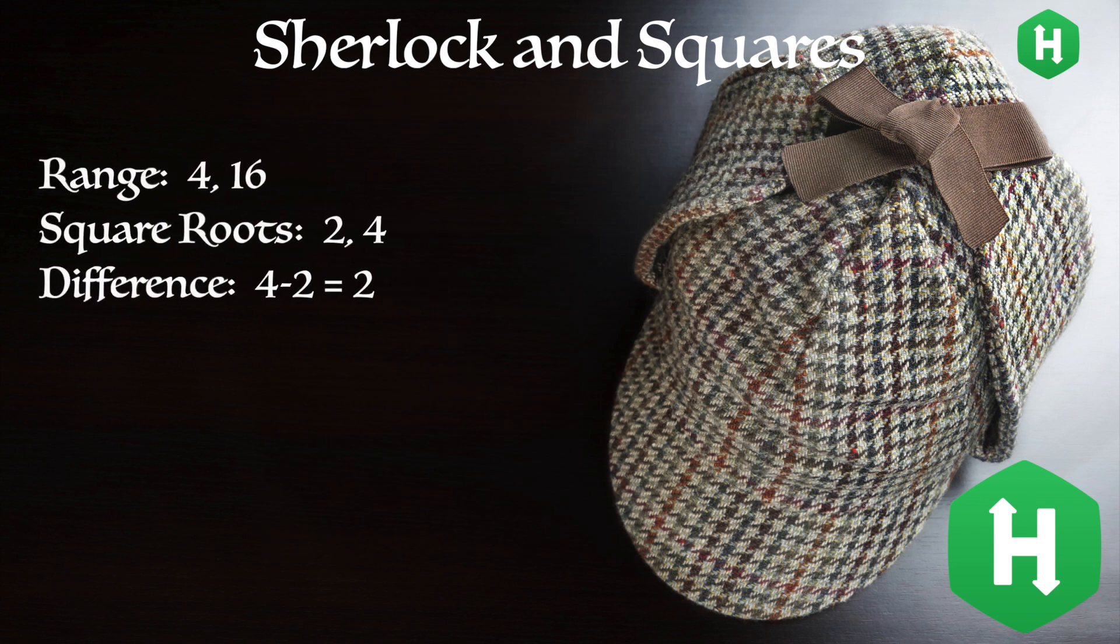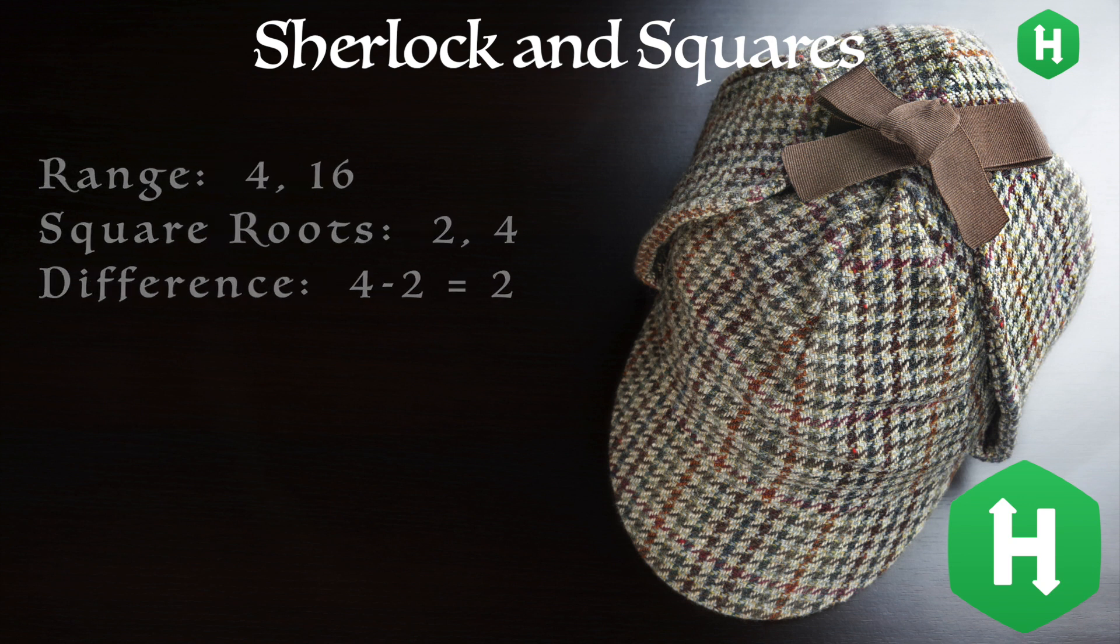For example, if our range is 4 and 16, the square root of 4 is 2, and the square root of 16 is 4. The difference of the upper and lower boundaries is 2.